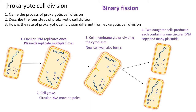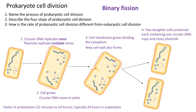Finally, how is the rate of prokaryote cell division different from eukaryote cell division? The key thing here is that it tends to be faster — it can be as fast as 12 minutes in some bacteria, whereas eukaryote cell division is typically up to 24 hours. So it tends to be much faster in bacterial cells.